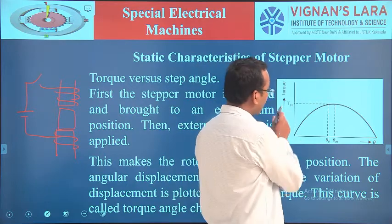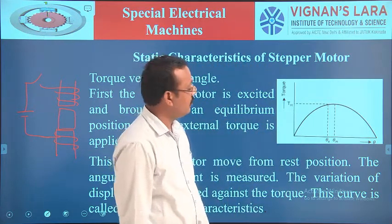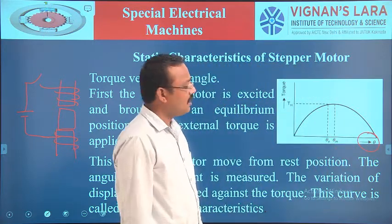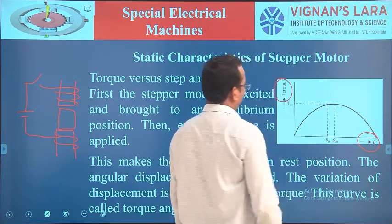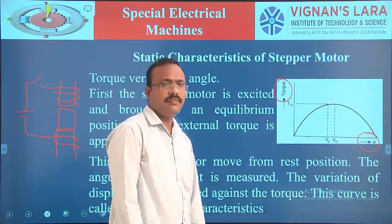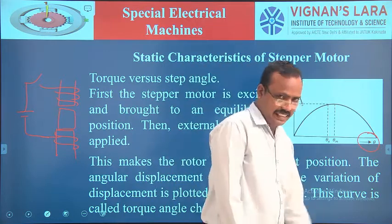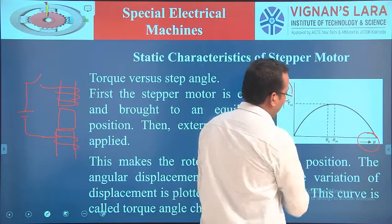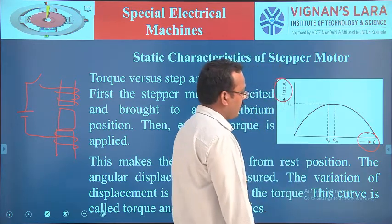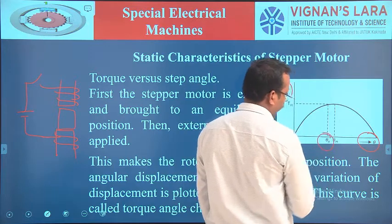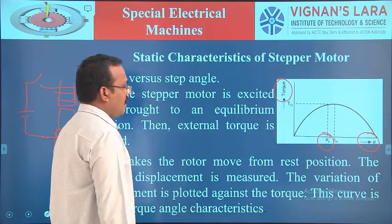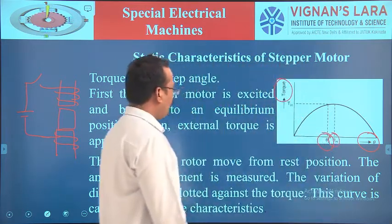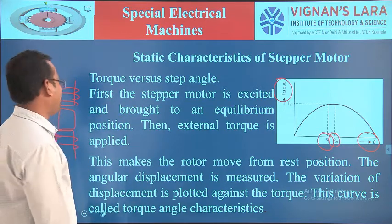This curve indicates torque versus step angle characteristics. The x-axis shows the step angle and there is a maximum step angle. This is called the static characteristics of the stepper motor.